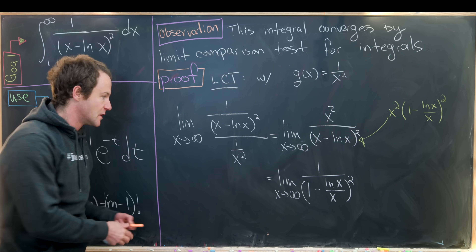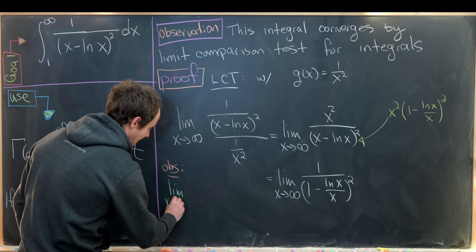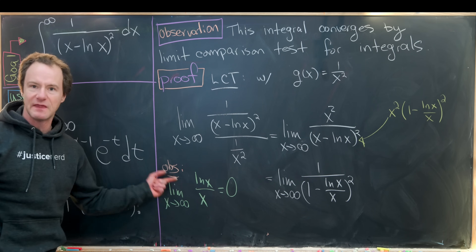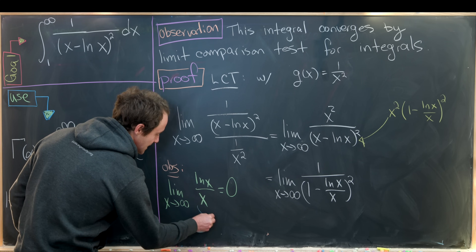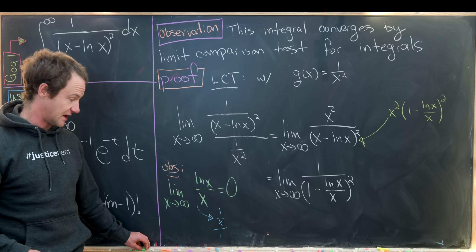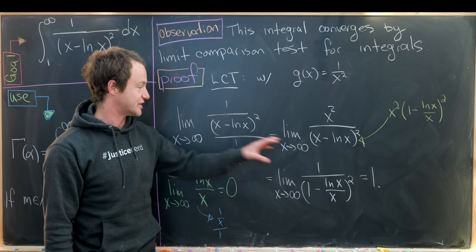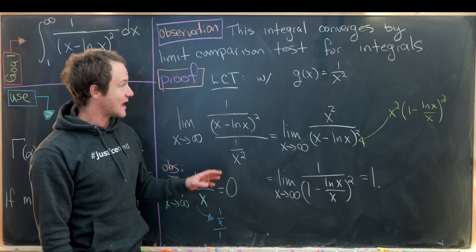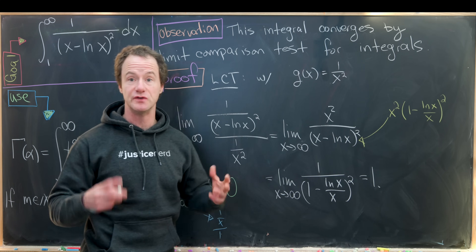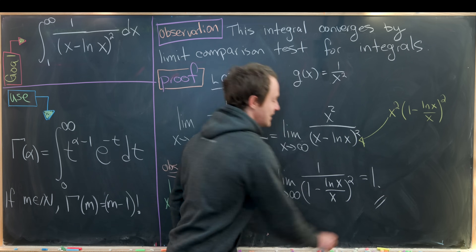As x tends to infinity, ln(x)/x tends to 0, which is easy to check using L'Hôpital's rule once: the derivative gives 1/x over 1, which clearly tends to 0. So this limit equals 1, which is finite. By the limit comparison test, since the integral of 1/x² converges, the integral of 1/(x minus ln x)² also converges.